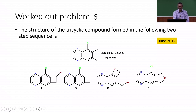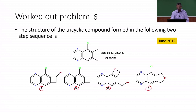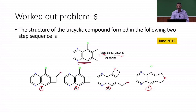In the next problem, we are given a bicyclic compound and asked to identify the tricyclic compound formed in a two-step reaction sequence. Four compounds A, B, C, D are given. This question was asked in June 2012. The reagents given are two equivalents of NBS and benzoyl peroxide — another radical initiator — under thermal conditions. The second step uses aqueous sodium hydroxide.